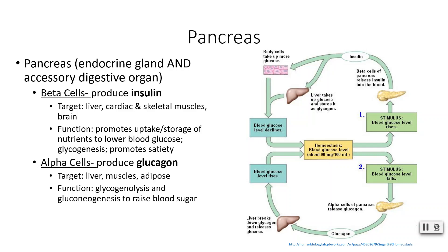Glucagon targets many similar organs — your liver and muscles — but also stimulates adipose fat cells. The function is quite different: glucagon stimulates glycogenolysis and gluconeogenesis to raise blood sugar levels. If you skip lunch, glucagon gets released, targets your liver, fat cells, and muscle reserves. We take glycogen, break it down (lysis means to break), and turn it back into glucose for energy. We can also take fat and do gluconeogenesis — building new glucose molecules. Both processes are meant to raise blood sugar levels back to normal.